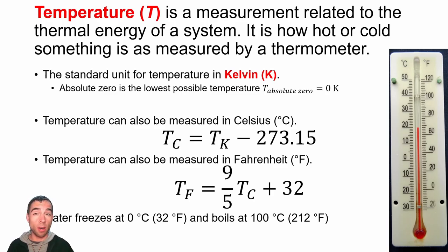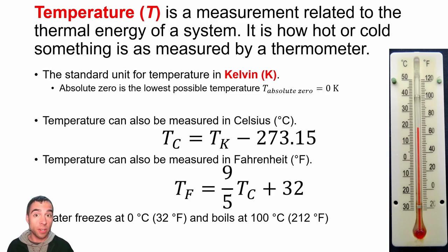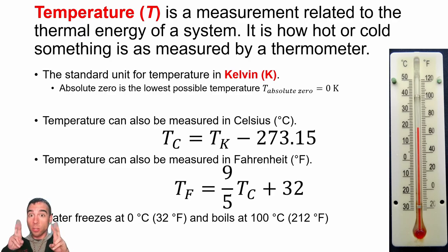Temperature is a measurement of the thermal energy contained in a system. It tells you how hot or cold a system is and is measured using a thermometer. The standard unit for temperature in physics class is Kelvin — the absolute temperature scale. If you have a system at zero Kelvin, we say it's at absolute zero, which means there is no thermal energy in the system at all.